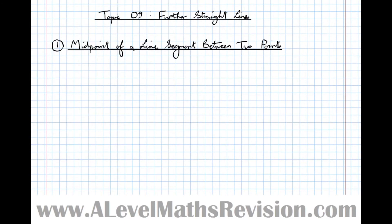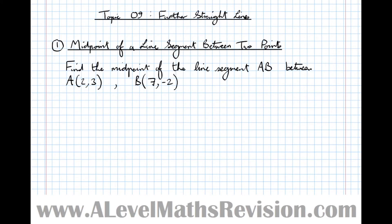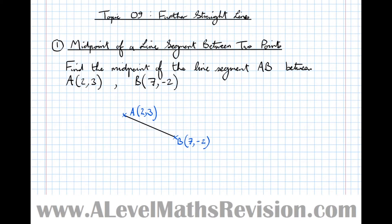So the midpoint of a line segment between two points. Say we were asked to find the midpoint of a line segment AB between two points A(2, 3) and B(7, -2). The first thing we can do is draw a semi-accurate diagram. Point A is at (2, 3), the x-coordinate of B at 7 will be to the right, and the y-coordinate will be down a bit because it's minus 2, so B is roughly there. The line segment we're talking about is this one here.